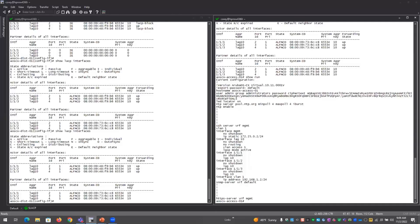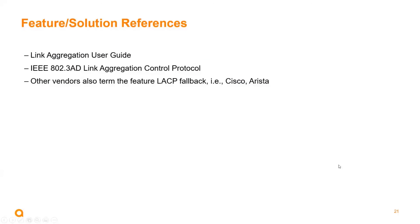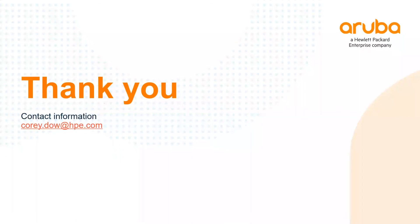Some solution references for link aggregation include the user guide — a good place to look for troubleshooting information — as well as the actual IEEE standard. Other vendors also call this feature LACP Fallback, so you'll find information across different vendor documentation, and it's implemented pretty much the same way as everybody else. Thanks for your time and hope you enjoyed the session.